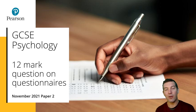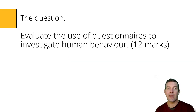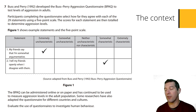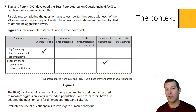This is a short exam technique video for students and teachers of GCSE Psychology. We're looking at a 12-mark question from GCSE Paper 2 November 2021 about questionnaires. The question comes at the end of a context about the Buss-Perry Aggression Questionnaire, which isn't on the specification, so it's not something students are expected to know about. Instead, it's novel context to apply their knowledge of questionnaires to.